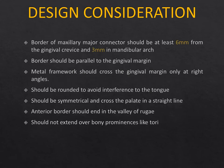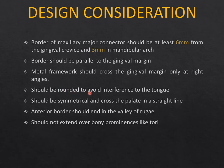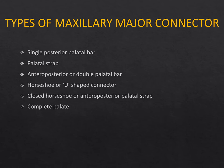Design considerations: in the maxilla, the border should be at least 6 mm away from the gingival margin; in the mandible, at least 3 mm away. The superior border should be parallel to the gingival margin, following the gingival zenith of the teeth. The metal framework should cross the gingival margin at a right angle to cover minimum gingival tissue. Connectors should be rounded, symmetrical, and cross the palate in a straight line. The anterior border should end in the valley of the rugae — not on or across the rugae. They should not extend over bony prominences like tori, exostosis, or the prominent mylohyoid ridge.